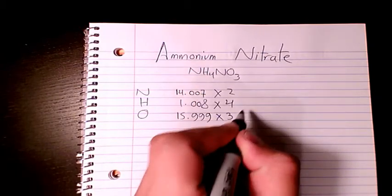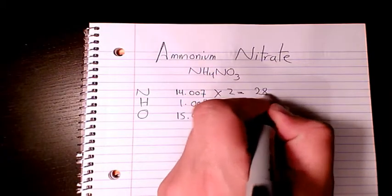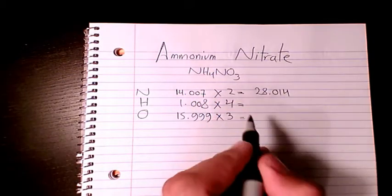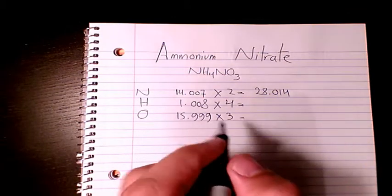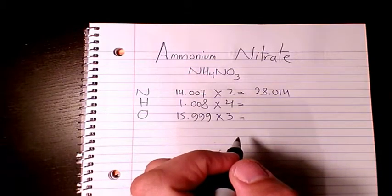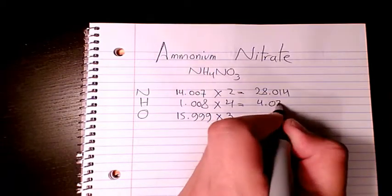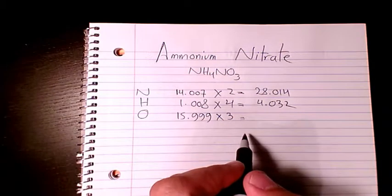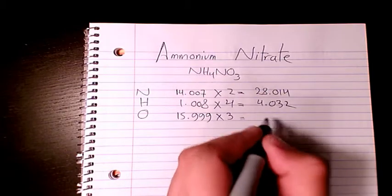Let me calculate it. 14.007 times two equals 28.014. Four times 1.008 equals 4.032. And finally, three times 15.999 equals 47.997.